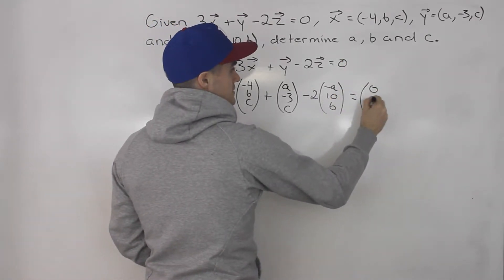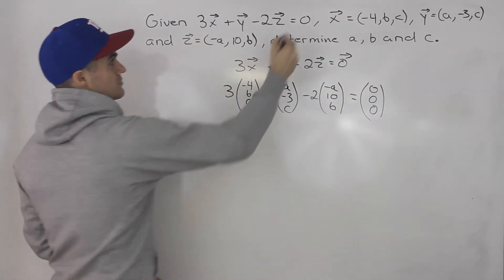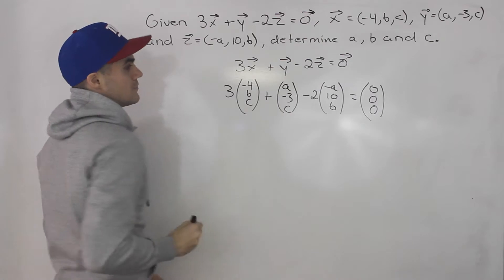So this is like (0, 0, 0). This is like the 0 vector. There should actually be an arrow up there, technically.